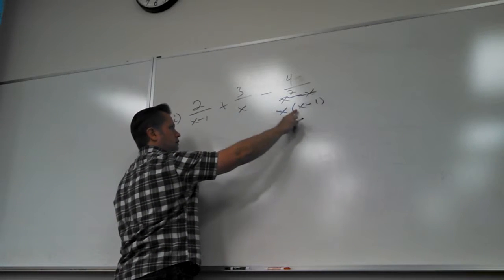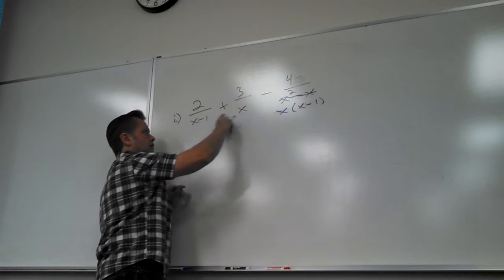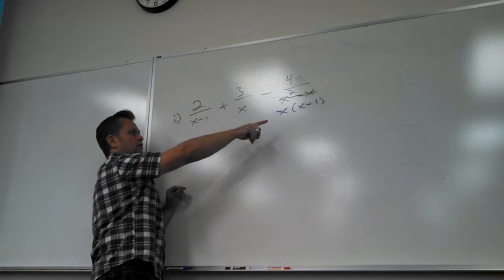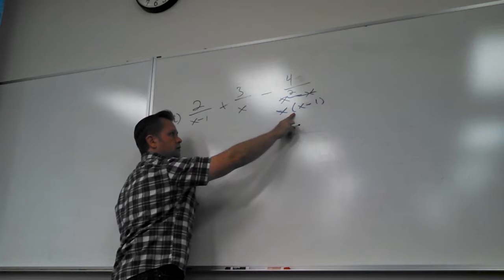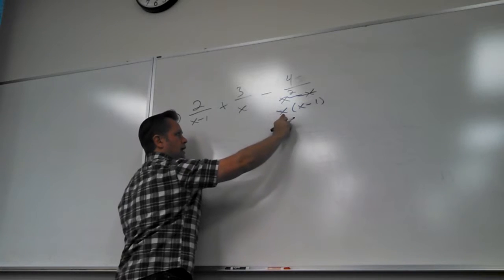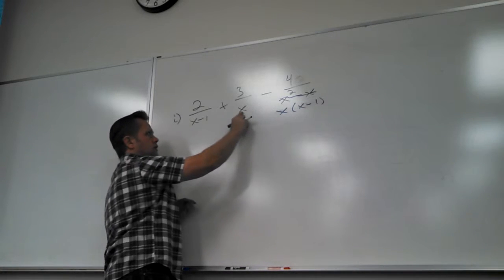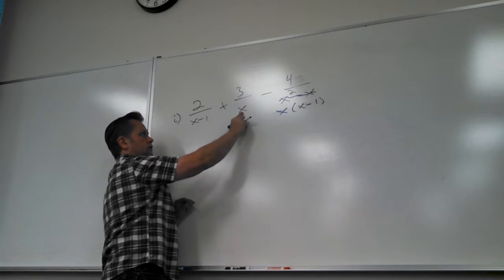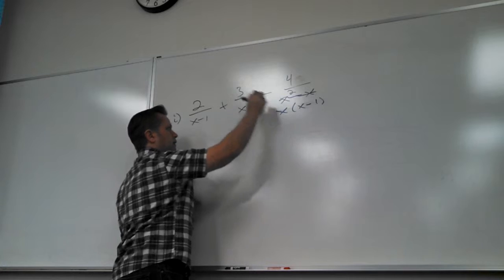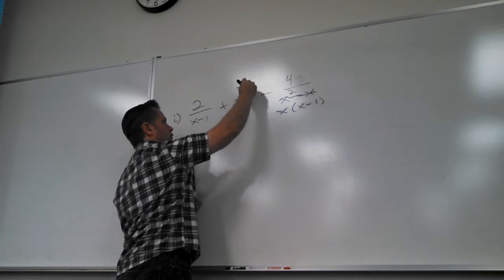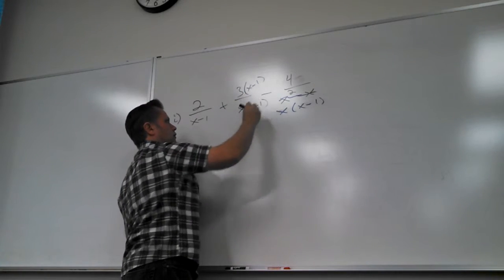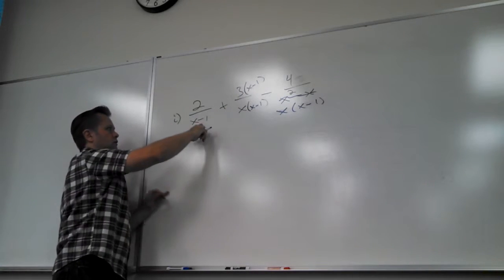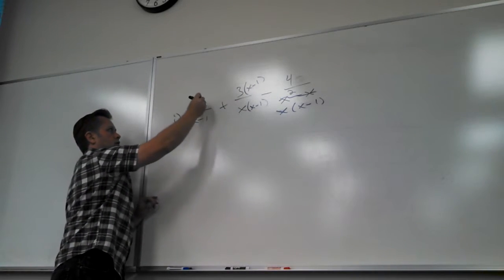Is it missing anything that these other fractions have? He's got X — so what's he missing? X minus one, because these fractions have an X minus one. And what's the other one missing? X.